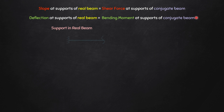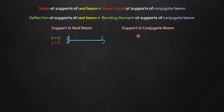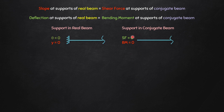For a fixed support in a real beam, slope θ = 0 and deflection y = 0. Therefore, in the conjugate beam, both shear force and bending moment must be zero at that point — that is a free end. So if you have a fixed support in the real beam, you will have a free end in the conjugate beam at that same point.